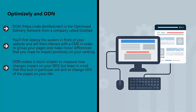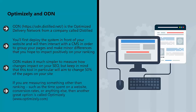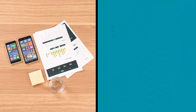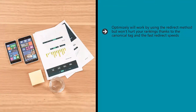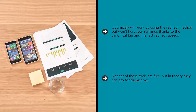That said, ODN is one of the best options for those that want to get started with split testing but don't want to tinker with their own website or hire a developer. If you are measuring something other than ranking — such as the time spent on a website, conversion rates, or anything else — then another great option is called Optimizely (www.optimizely.com). Optimizely will work by using the redirect method but won't hurt your rankings thanks to the canonical tag and the fast redirect speeds. Neither of these tools are free, but in theory they can pay for themselves. If you're interested in split testing and want to make your life as simple as possible, then try them out.